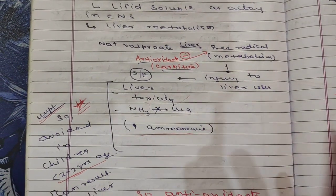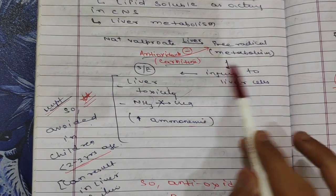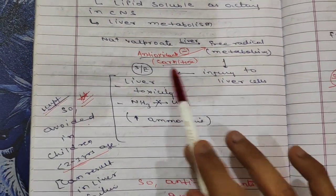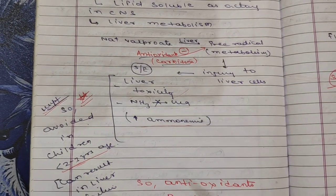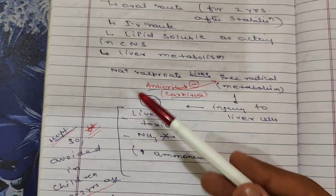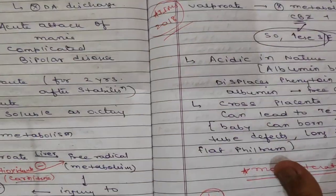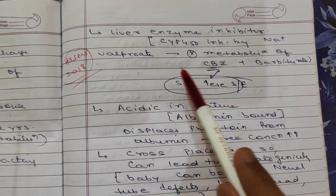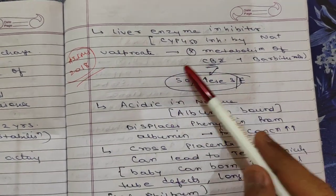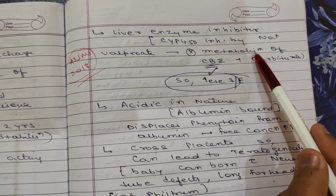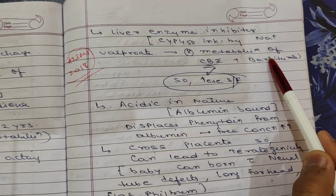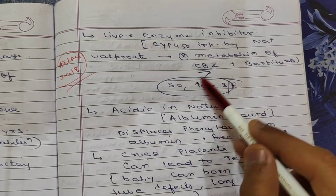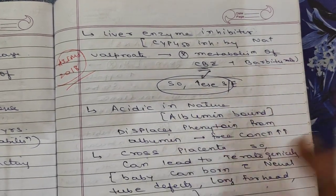For the liver toxicity caused by free radical formation, the antioxidant L-carnitine can be given — it is usually co-administered with sodium valproate. Sodium valproate is also a CYP450 liver enzyme inhibitor, meaning it inhibits the metabolism of carbamazepine and barbiturates, thereby increasing their side effects.